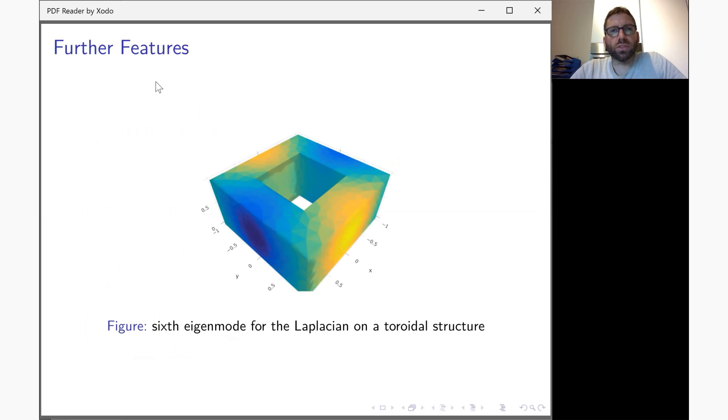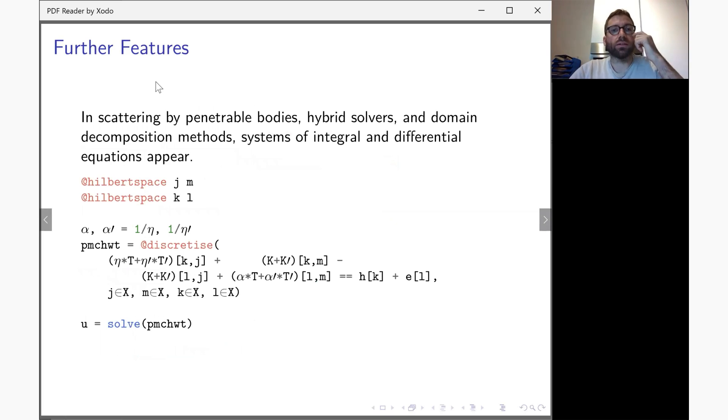It is also possible to write down systems of equations. What you need to do is you have to declare multiple trial symbols and test symbols. Then the different blocks that fit into this macro system will simply be communicated to the system by having various bilinear forms act on different pairs of trial vectors and test vectors. The assembly routine will figure all of that out and will make sure that the correct contributions end up in the correct location. This is, for example, important if you want to do scattering by penetrable objects where both Cauchy data have a role to play.